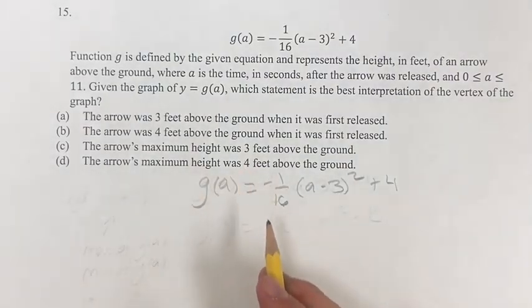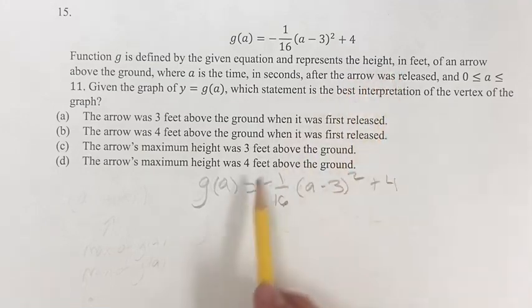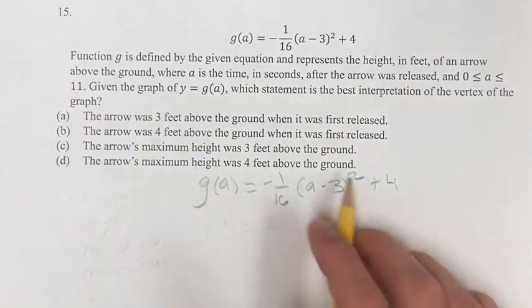All right, and so this is representing the height of an arrow after a seconds from the arrow being released. Okay, so we're shooting an arrow into the air, it's going up, it's going down, and it's being measured by this.